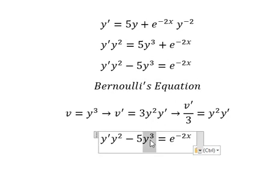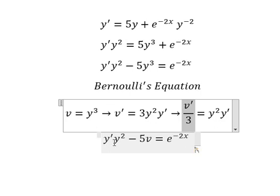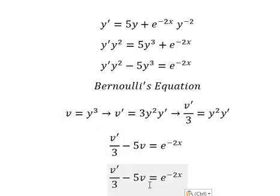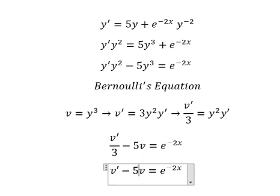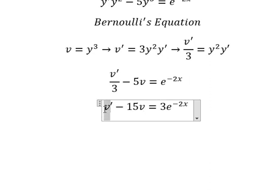So this one we change by v, and this one we change by this one. Next, we multiply both sides by number 3. So we have v and the first derivative of v.